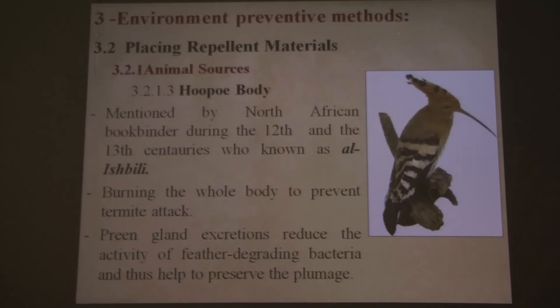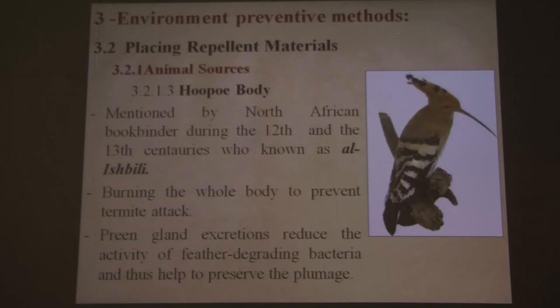The third animal-derived source is the hoopoe bird body. This method had also been mentioned by the North African bookbinder mentioned before — Ishvili — who would burn the whole body of the hoopoe bird as a fumigation process to prevent termite attacks on manuscripts. I was not able to find a scientific explanation for choosing specifically this bird. The only reason I found in modern research is that this bird has a gland called the uropygial gland, which provides secretions that reduce feather degradation and has antibacterial properties. Whether that was the reason, it needs modern research to clarify.